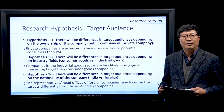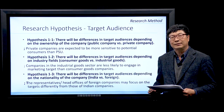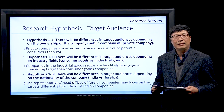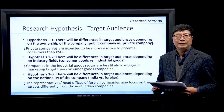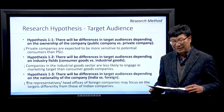The second hypothesis is that there will be a difference in target audience depending on the industry fields. Companies in the industrial goods sectors are less likely to engage in marketing targets than customer goods companies. The third hypothesis is that there will be a difference in target audience depending on the nationality of the companies. The headquarters of foreign companies may focus on different targets from those of Indian companies.